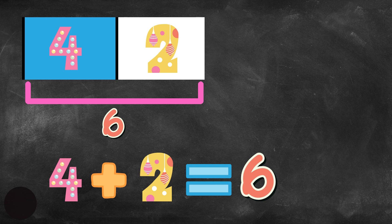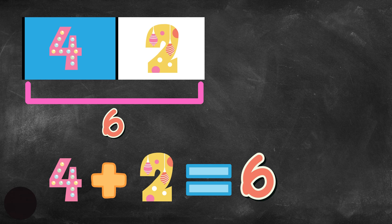There you go. This is what the number sentence should look like. Four plus two equals six. Remember that it can also be two plus four equals six because the order of the addends doesn't matter.